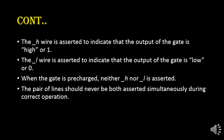H indicates the high value — if it is asserted, its value is equal to 1. Similarly, L indicates the low value — if it is asserted, its value is equal to 0. When the gate is pre-charged, either H or L is asserted, meaning H and L are both equal to 0. The pair of lines should never be both asserted simultaneously — that is, H and L should not both equal 1, as that would be invalid.